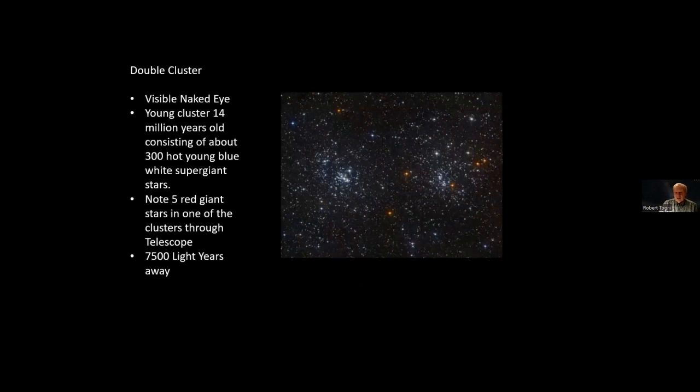Here's a picture of the double cluster. It's a young cluster, about 14 million years old, consisting of 300 hot young blue white supergiant stars, except that in one of the clusters, there's five red giant stars. So that just makes it really pop out. And you can see those in your library telescope. It's fun to try to see them. It's pretty far away, about 7,500 light years.